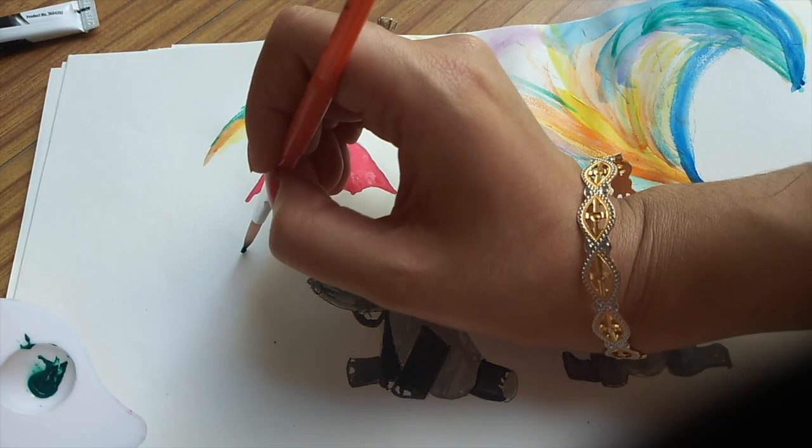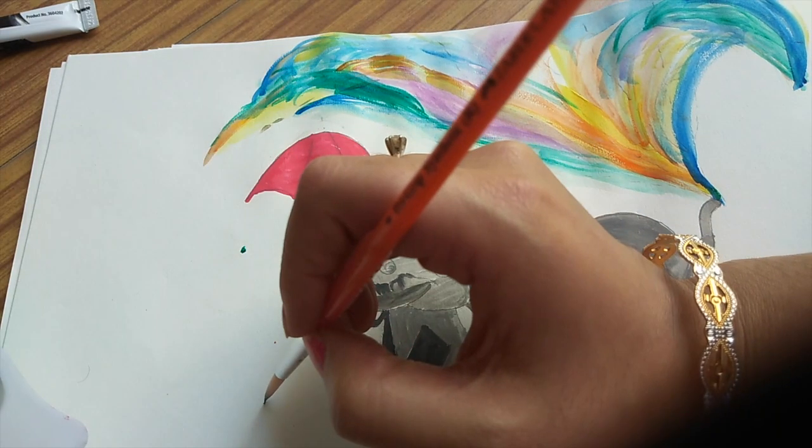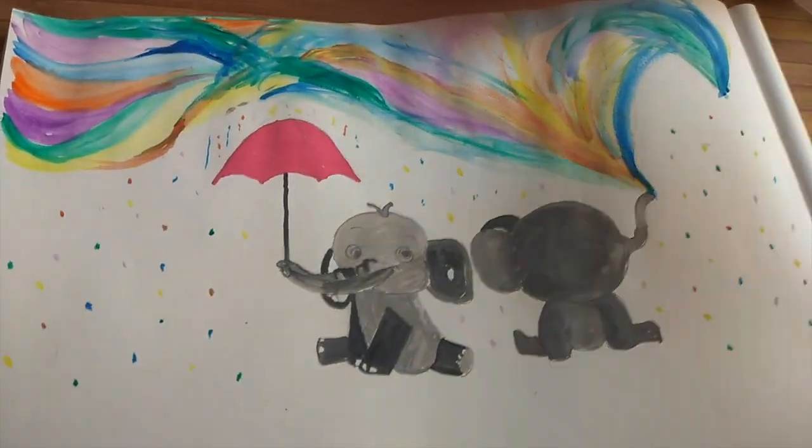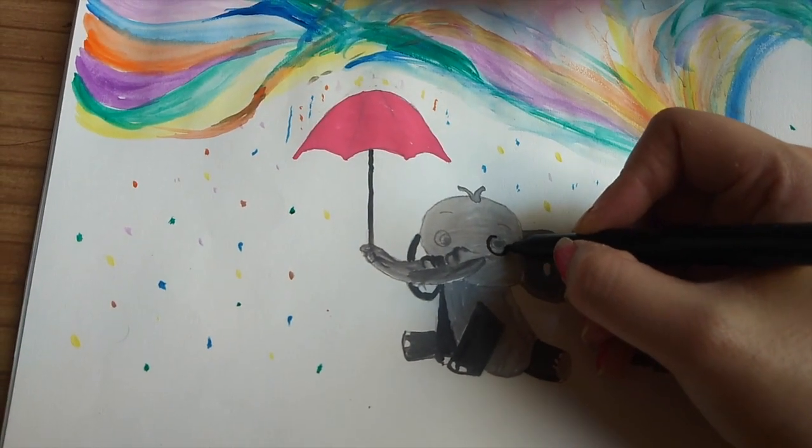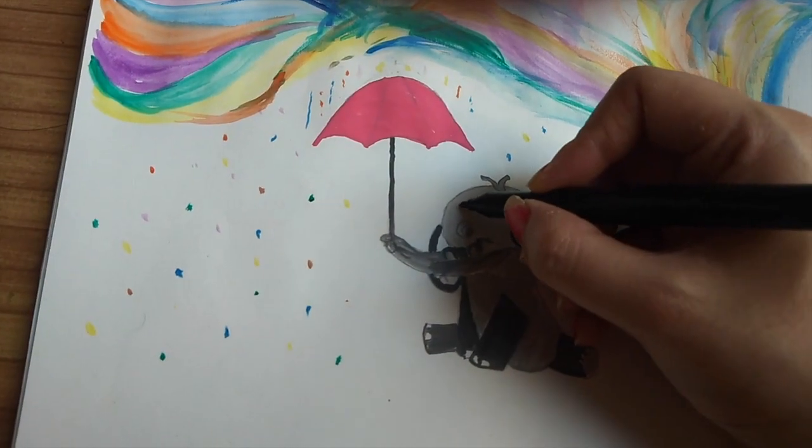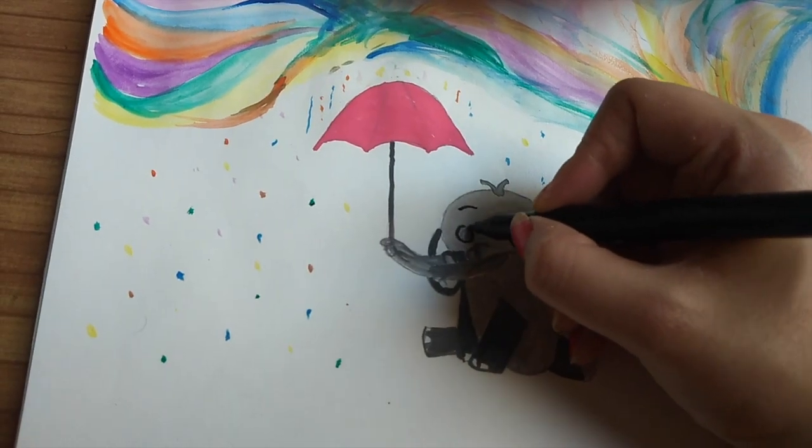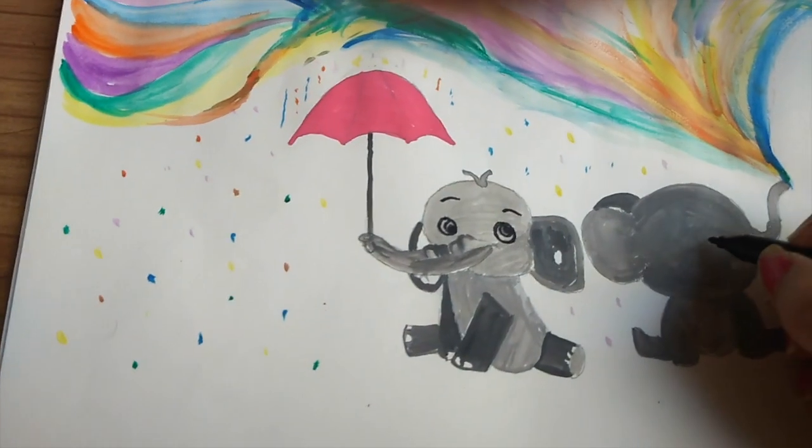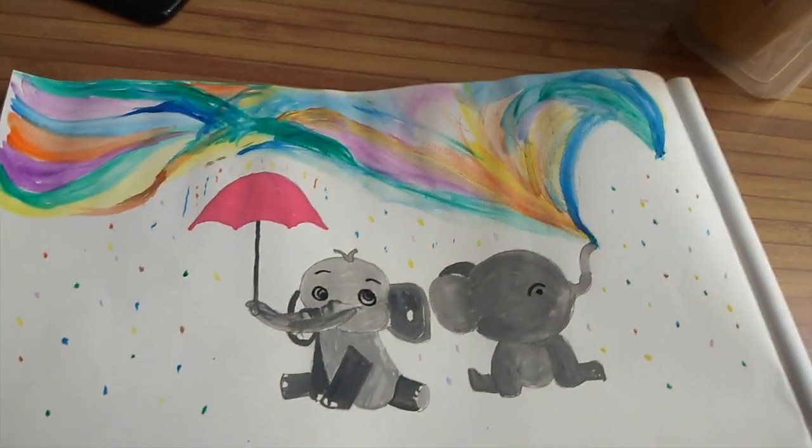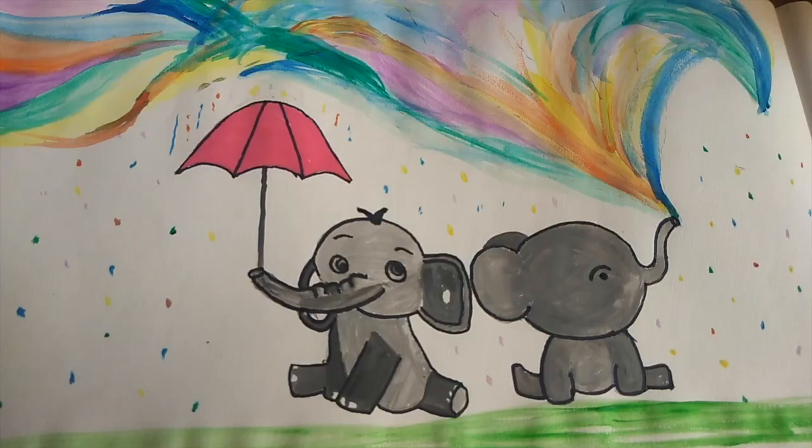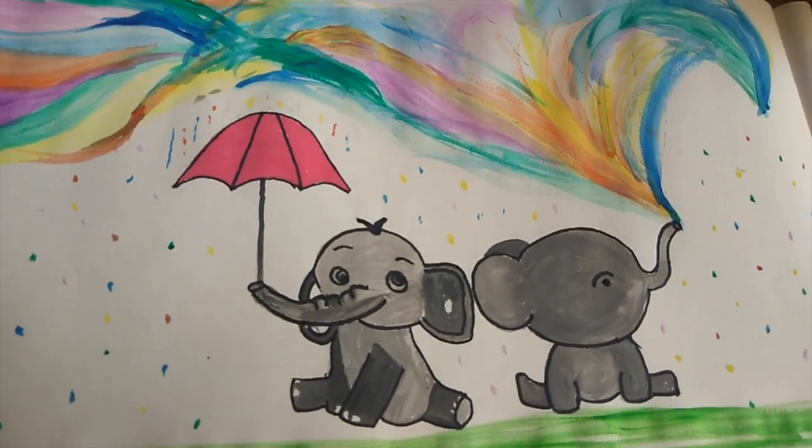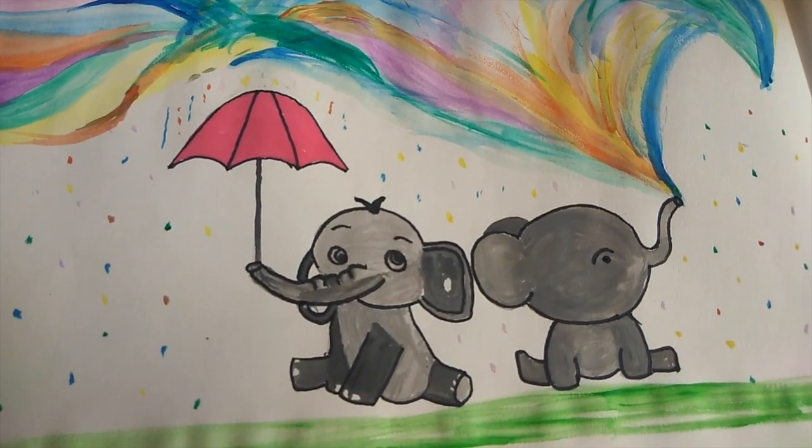Let the colors dry. Now the last step will be using a black marker. Make the eyes and the eyebrows for both the elephants. And here are our cute little elephants ready. Also add a little bit of green in the bottom to show the grass where they are sitting.